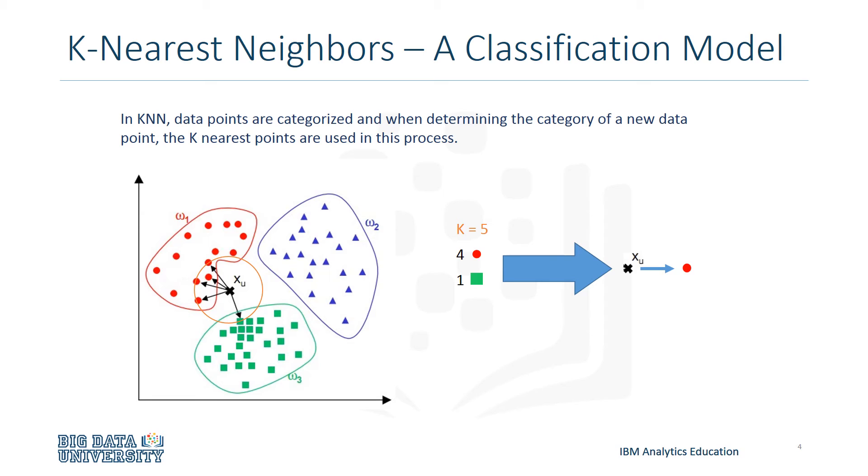In this example here, we're trying to classify the black x, labeled x-u, where the value of k is 5, or k equals 5. This is shown with the black arrows connecting the five nearest points. This can also be represented by a circle that encompasses these points.